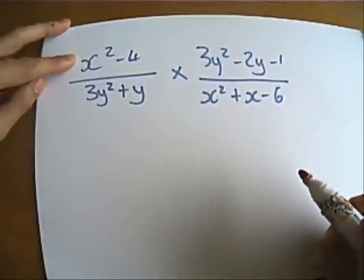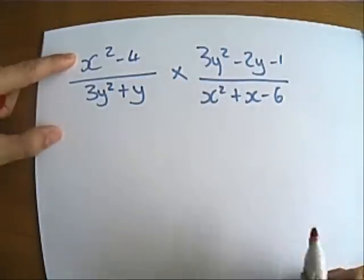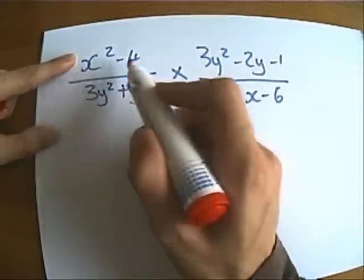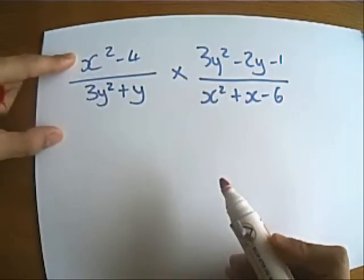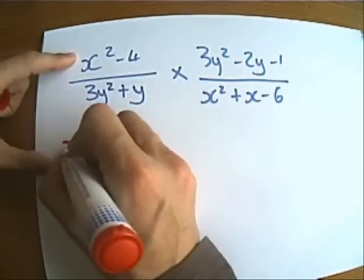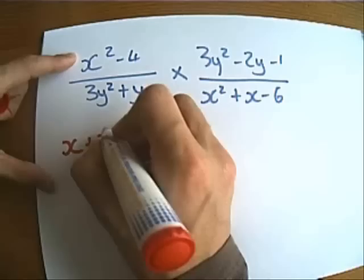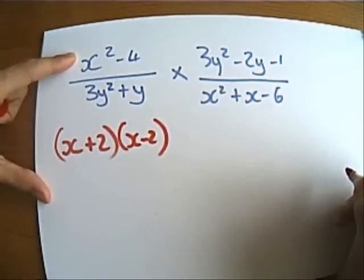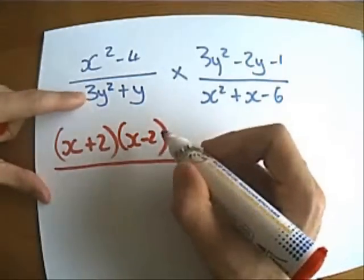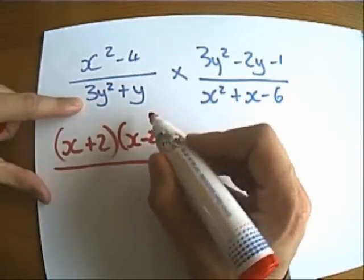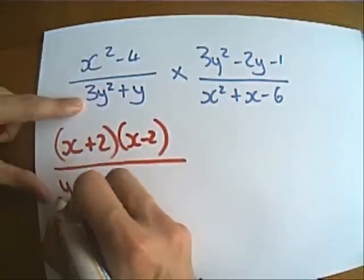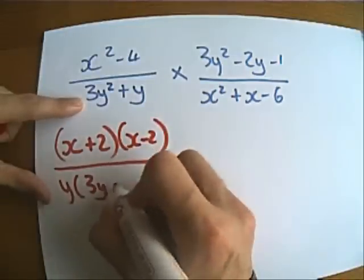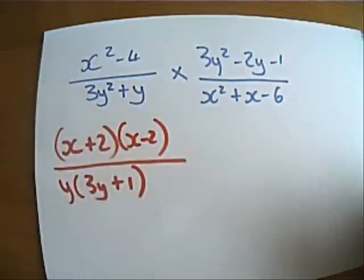So let's have a look. Can I factorise x squared minus 4? The geniuses amongst you will be going ah, hang on a minute, that's a square, that's two squared, that's the difference of two squares. So we can rewrite that as x plus 2, x minus 2. And let's factorise the bottom expression here, it's got a common factor of y, so I've now got that on the bottom.